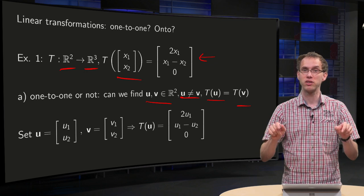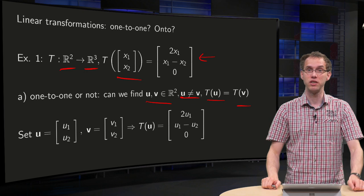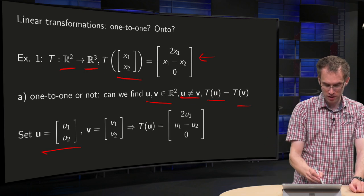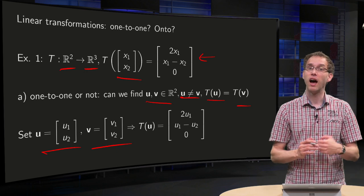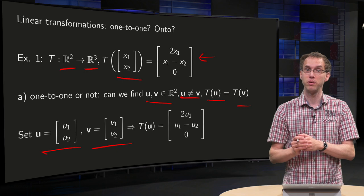We start with two different vectors and try to map them to the same point, and see whether we can succeed taking different vectors. We take a u arbitrarily, a v arbitrarily, and try to see what happens if we have T(u) equals T(v).